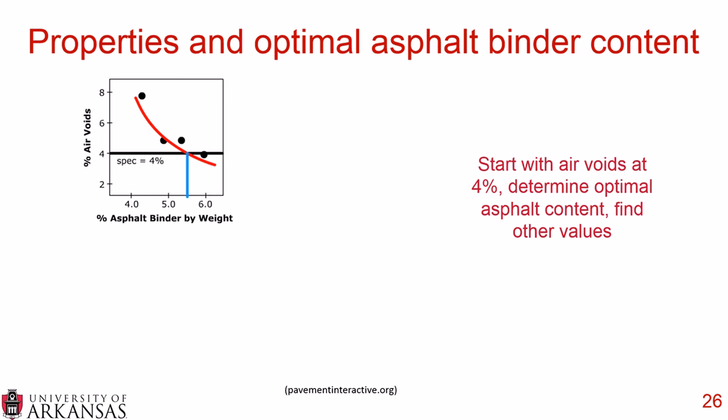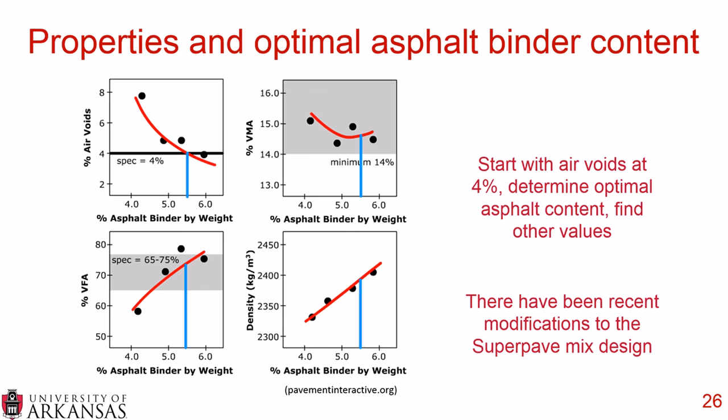Very similar to the Marshall method, we find the optimal asphalt binder by weight based on 4% air voids — moving from the y-axis at 4% air voids to the line, then dropping down to approximately 5.5% optimal asphalt binder in this graph. We then find the VMA, which needs to meet a minimum, the VFA, which needs to meet a range, and the density.